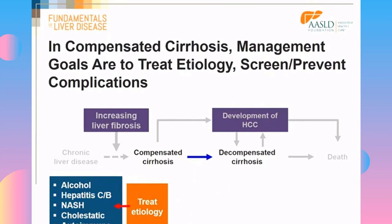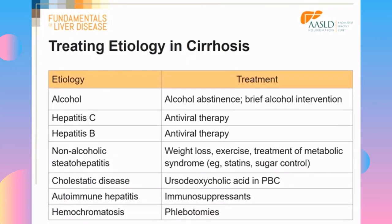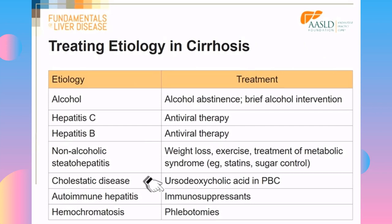The different strategies to treat the etiology include: alcohol abstinence for alcoholic cirrhosis, antiviral therapies for hepatitis C and B, weight loss, treatment of metabolic syndrome, and exercise for non-alcoholic steatohepatitis, UDCA in PBC, immunosuppressants for autoimmune hepatitis, and phlebotomies for hemochromatosis.